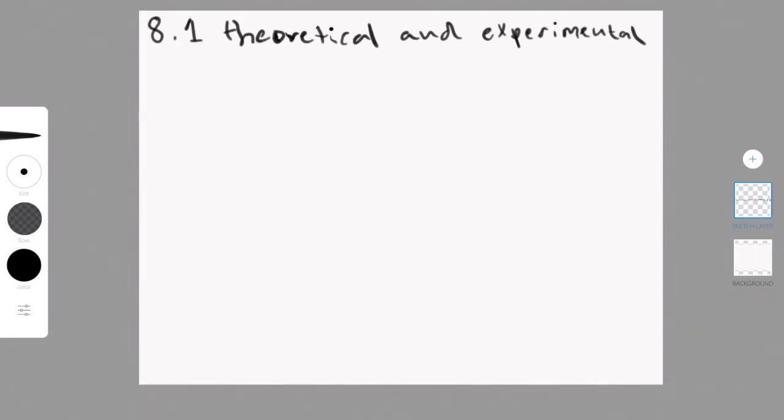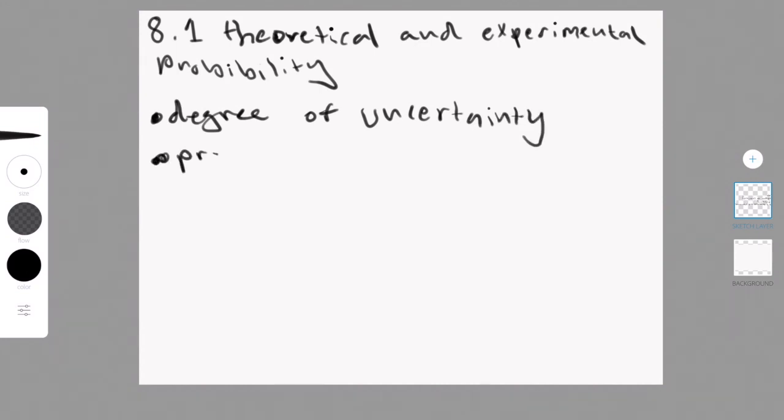Part 1 of chapter 8 is theoretical and experimental probability. So the whole point of probability is to understand the degree of uncertainty of something happening, of an event happening. And the questions in this chapter will be asked about probability experiments or just experiments. And this is something that has an uncertain result.